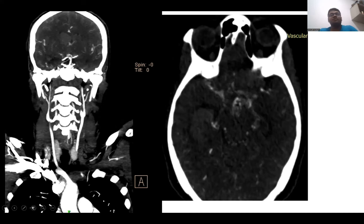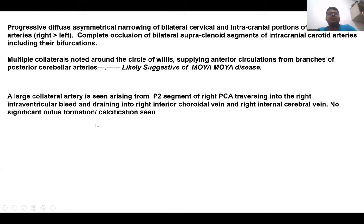In the case of bilateral intraventricular hemorrhage in the lateral ventricle, the cause was found to be moyamoya disease. There is narrowing of the internal carotid artery with complete occlusion of the supraclinoid portion of the internal carotid artery, and multiple collaterals are seen. Multiple collaterals are noted around the circle of Willis, supplying the anterior circulation from branches of the posterior cerebral arteries, suggestive of moyamoya disease.